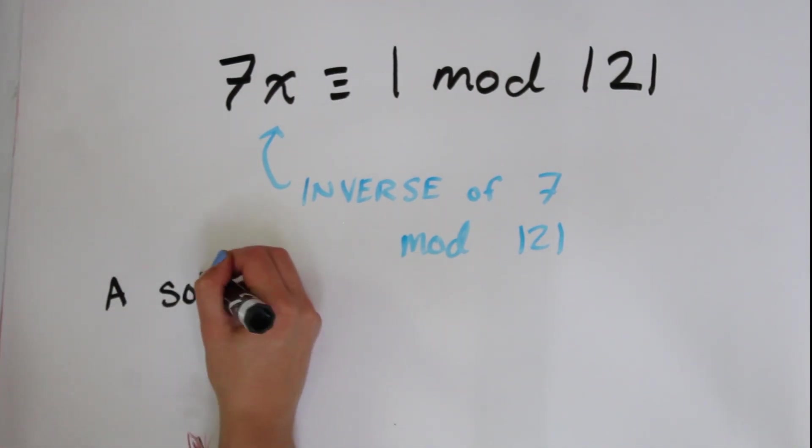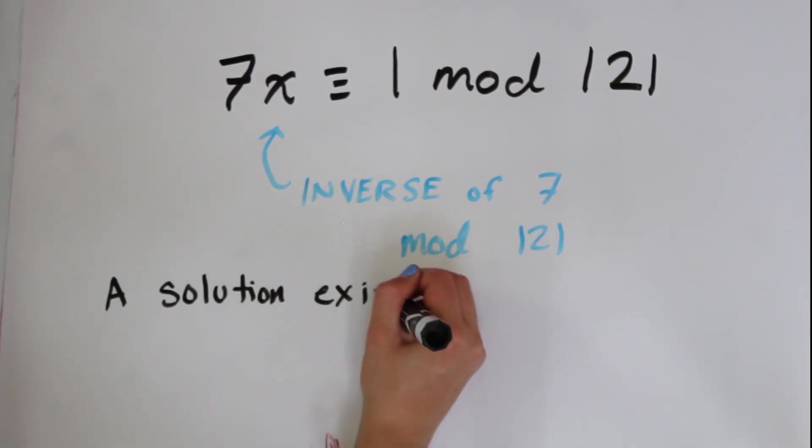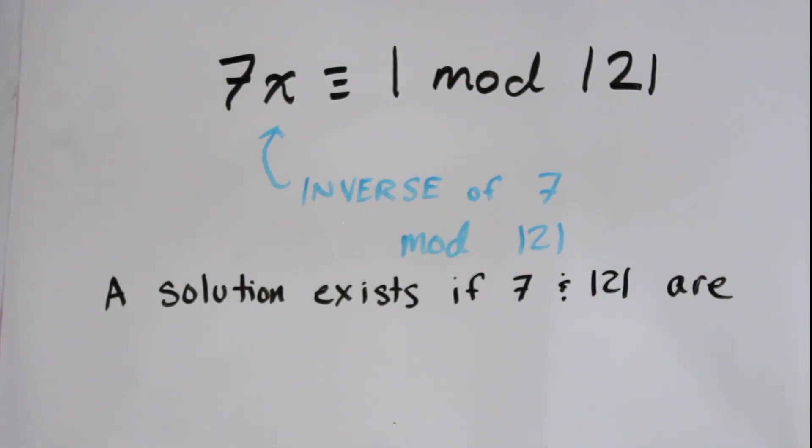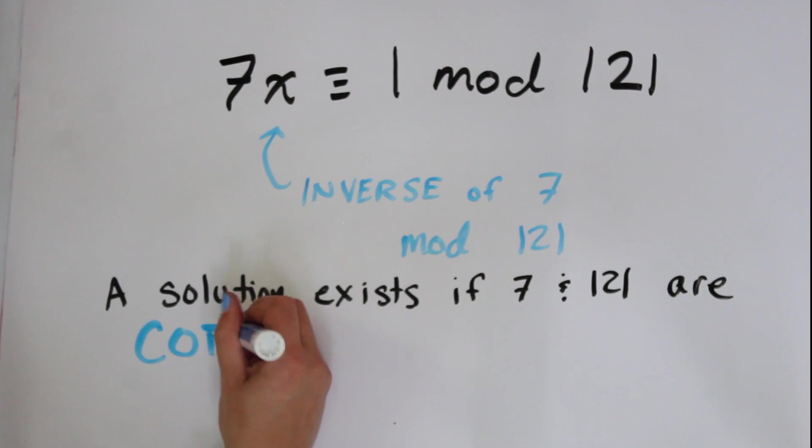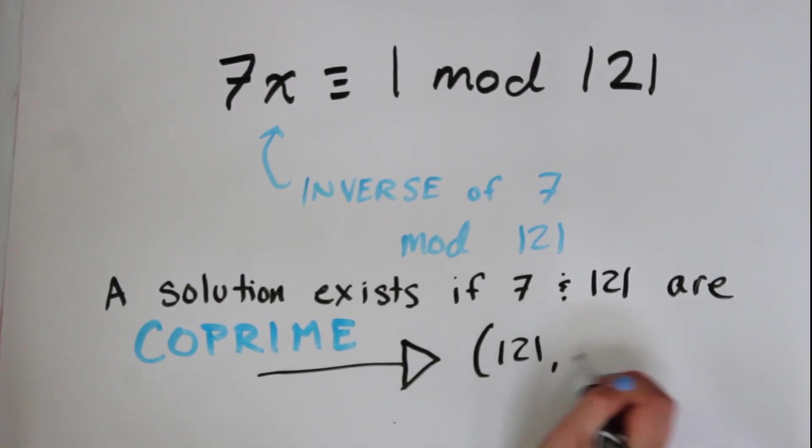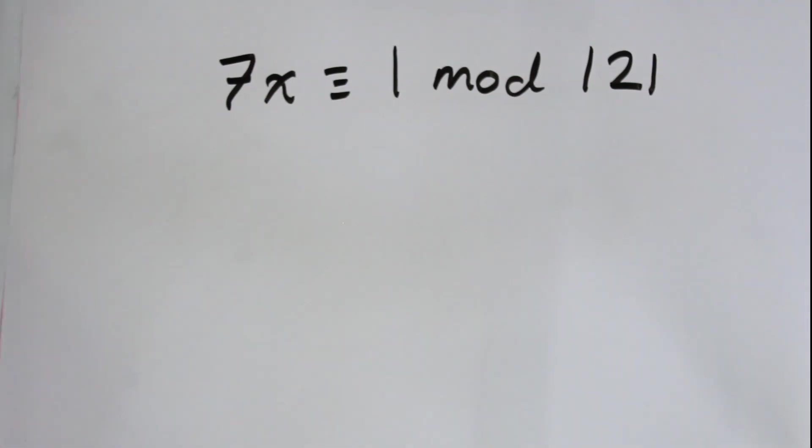We also know that a solution only exists for this congruence if 7 and 121 are coprime. But another way of saying that is that the greatest common divisor of 121 and 7 is 1. So at the end of the Euclidean algorithm, we'll get out a 1. I'll show you that now.